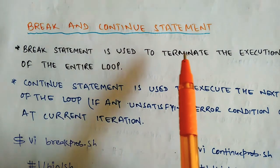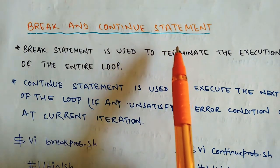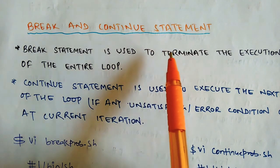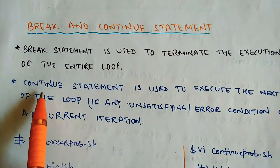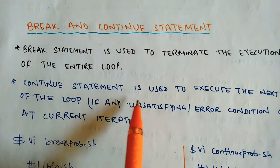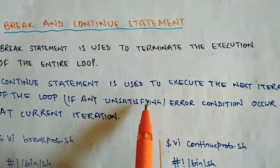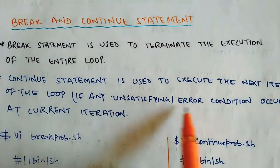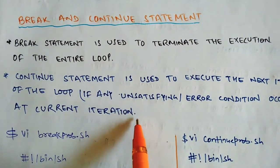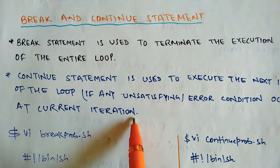Or in other words, we can say that continue statement is used to execute the next iteration. Here we have one point related to continue statement. Continue statement is used to execute the next iteration of the loop if any unsatisfying or error condition occurs at the current iteration. If this happens, then continue is used to execute the next iteration.